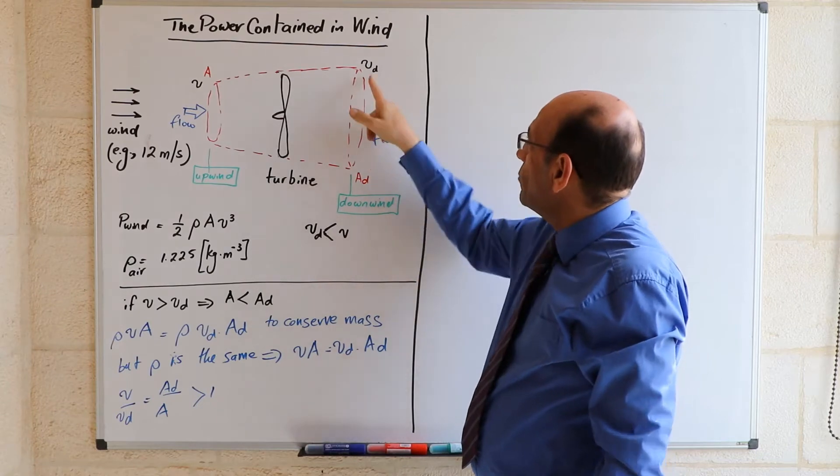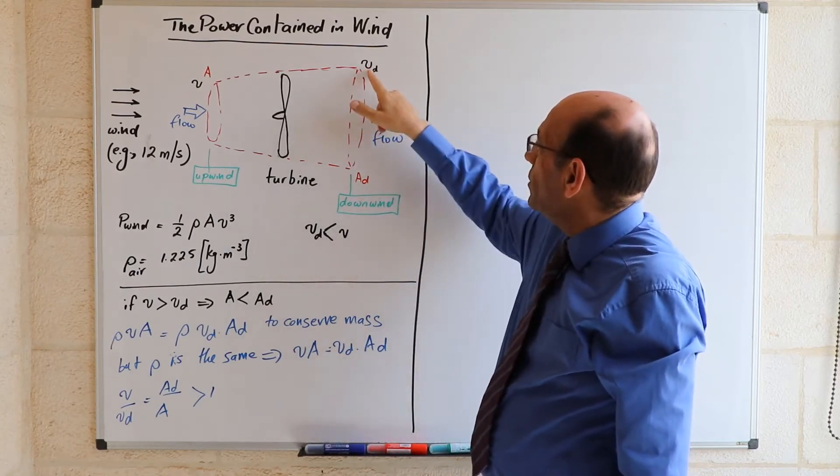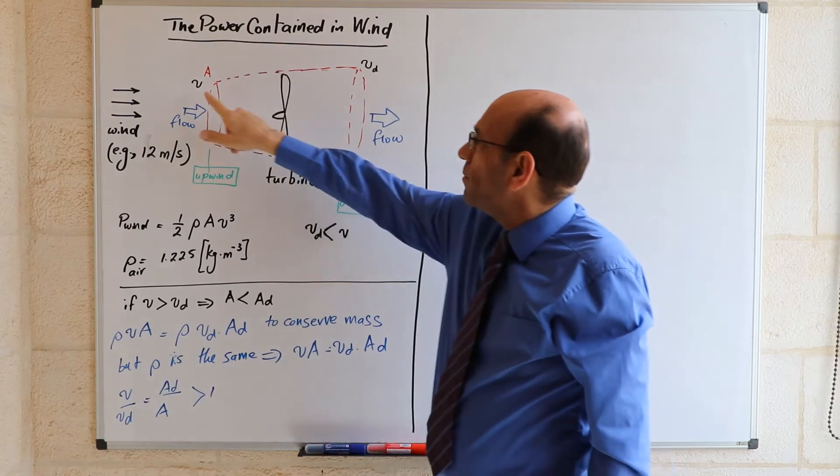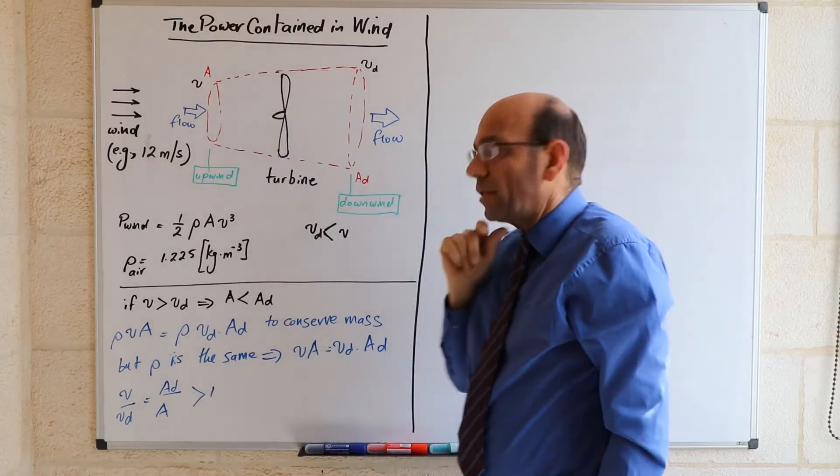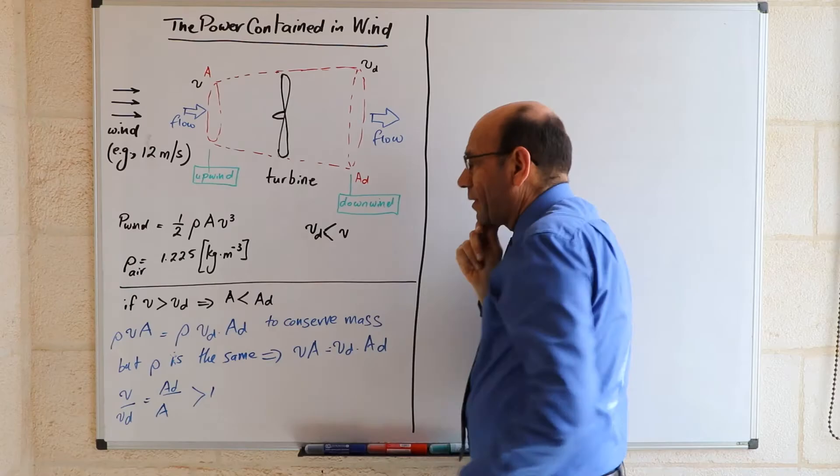Which means that the downwind speed, we've referred to this point as downwind, so the downwind speed will by definition be smaller than the upwind speed. So Vd will be smaller than V.